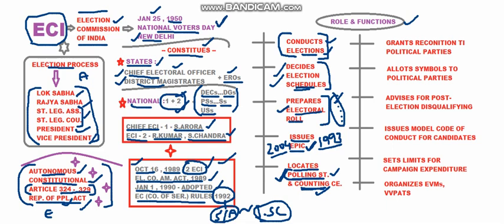On the political party front, ECI grants recognition to political parties wishing to contest elections. It also allots unique symbols to political parties, since each political party has its own distinct symbol.